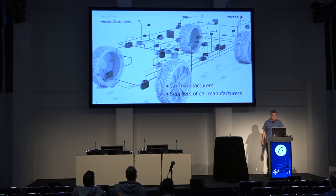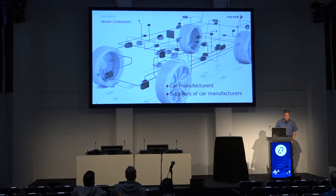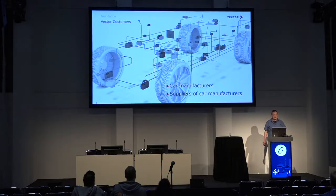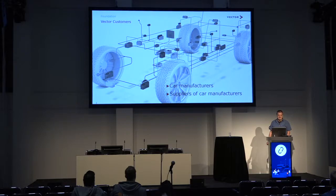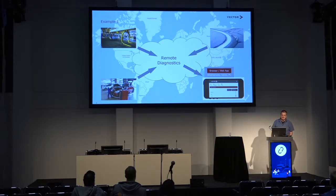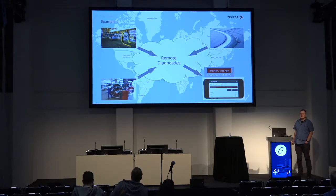Vector customers are car manufacturers — pretty much all car manufacturers around the world — and suppliers of car manufacturers that we call tier ones. We sell our products and our cloud services together with Vector products. That means you get to use our cloud services by purchasing a Vector product the regular way. Let me briefly introduce with a couple of examples what our customers are doing with cloud services and why.